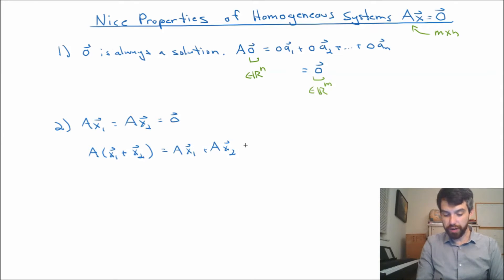But nonetheless, after I've distributed it, well, Ax1, this was just going to be equal to 0. And Ax2, that was just going to be 0. So 0 + 0 is just going to be equal to 0. In other words, if I have two solutions to a homogeneous, their sum is also a solution to the homogeneous.